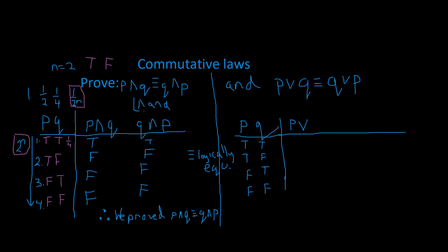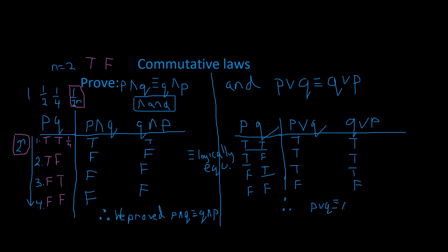Now we're going to prove this for the OR statement. We've got to put down our compound statements — our sentences. We look at our truth table: if one or the other is true then the statement is true. So this one's true, true — these are both true so that's true. These are both false so it has to be false. And this one's true, true, true, false. We conclude our proof and say: thus, P or Q is logically equivalent to Q or P.